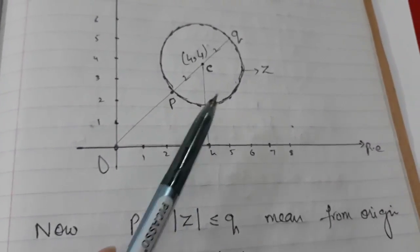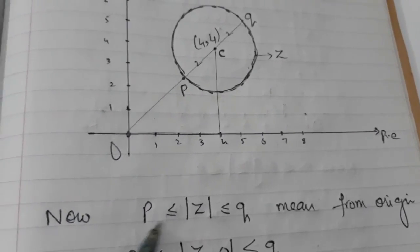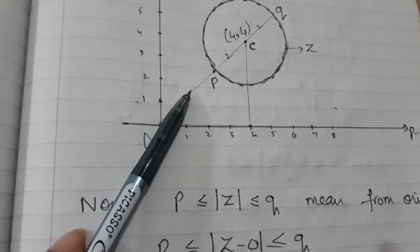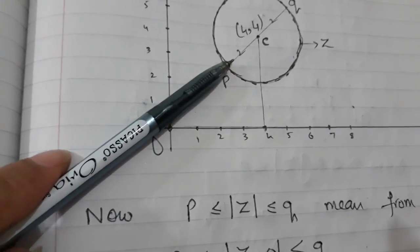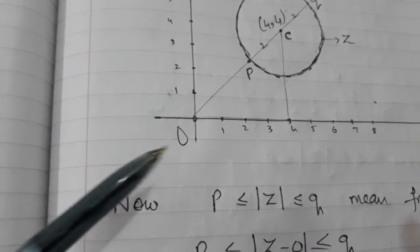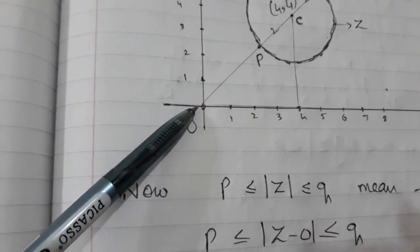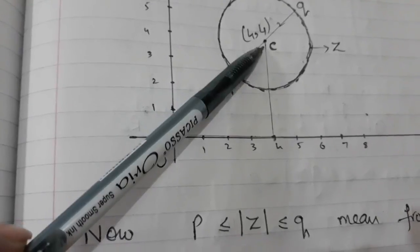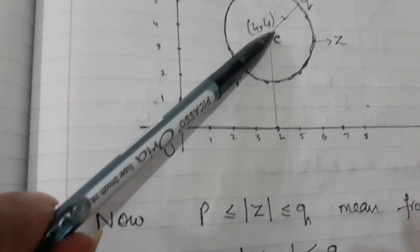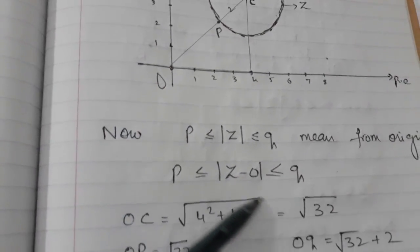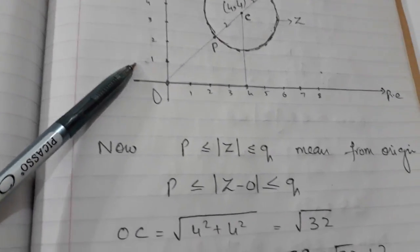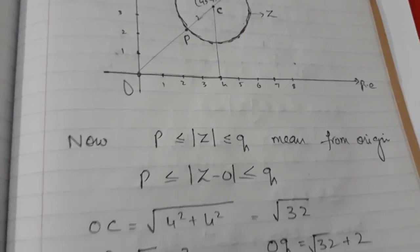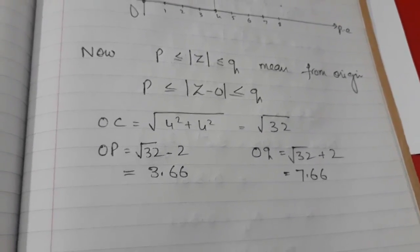Now I have to find the distance of this locus from the origin — specifically the smallest and largest distances within which my region lies. The line through the center of the circle gives the greatest distance from the origin, and the near side gives the least. This gives OP and OQ. I know the center coordinates are four and four, so by Pythagoras theorem, OC equals root 32. Therefore OQ equals root 32 plus 2.